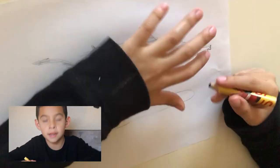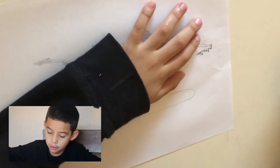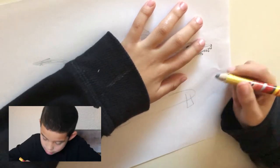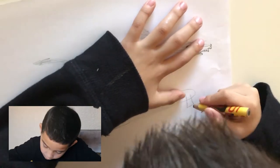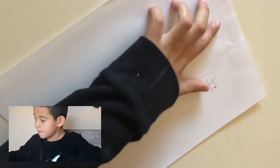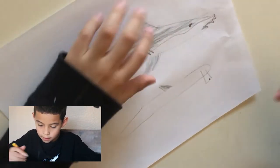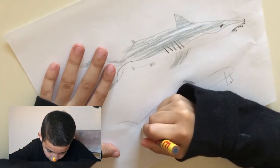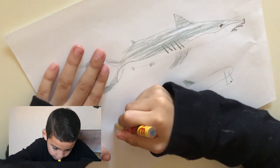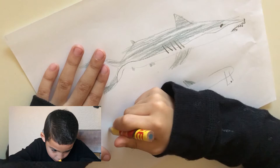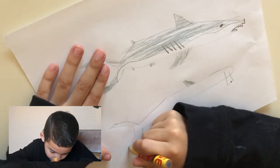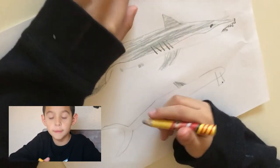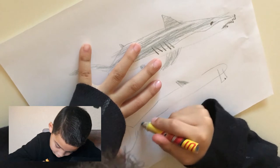And get your black pencil, actually your gray pencil, and start drawing the eye. And then you put it down to the tail.